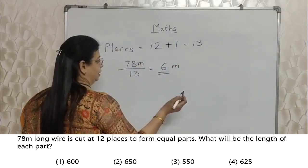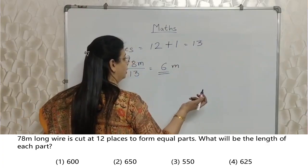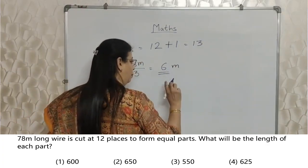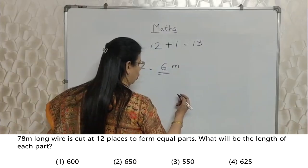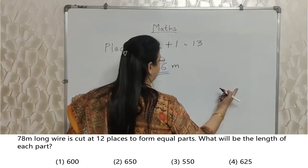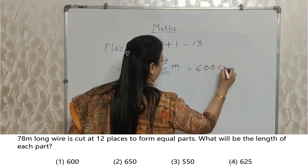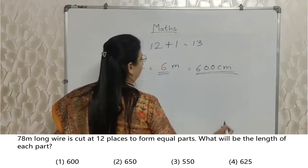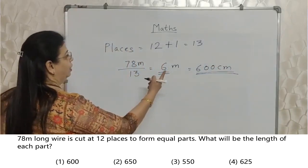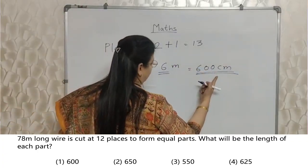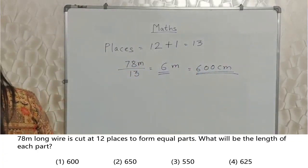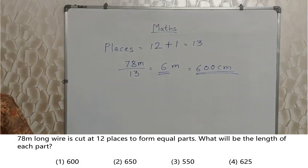This was meter, so obviously this was meter. But in case they have given options in centimeter, 1 meter is how many centimeters? That also you are supposed to know. 1 meter is 100 centimeters. So 6 meter is 600 centimeters. They might give this or they might give this. So you should know all the relations of the units.